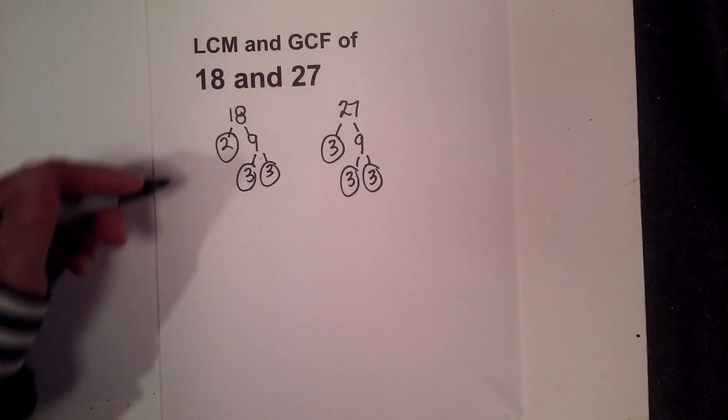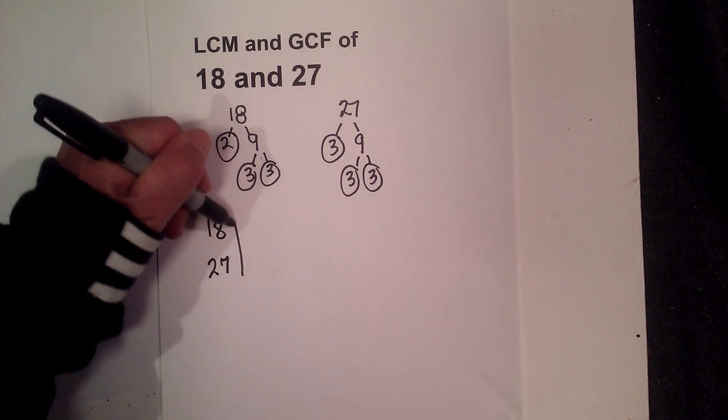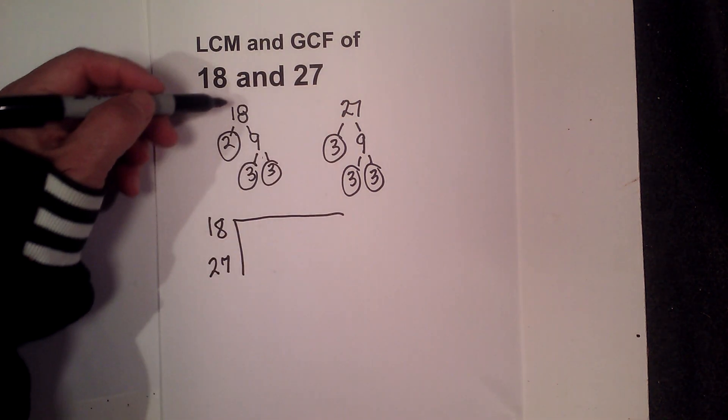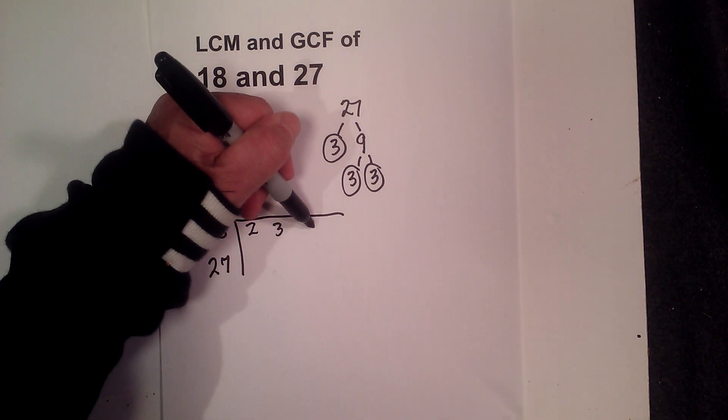So now I create a chart, and this makes it really easy. So I write all the prime numbers. First, I'm going to start with 18. I have 2, 3, and 3.